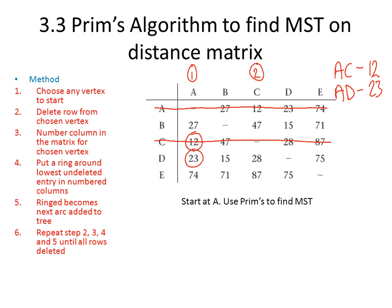So we're now at D, so we put a 3 above D. Obviously if we're at D, we can't travel to D, so we cross out the row. We look for the smallest number now in columns 1, 2, and 3. The smallest number this time is 15 — D to B is 15.